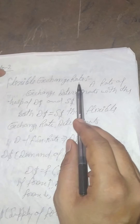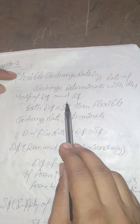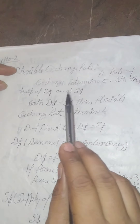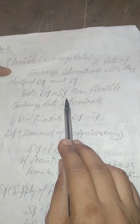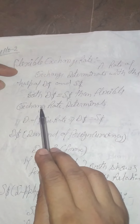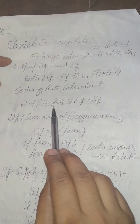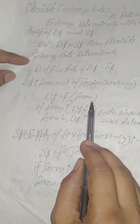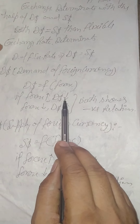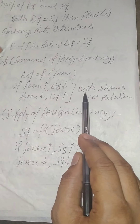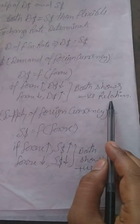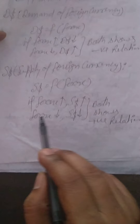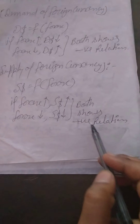Flexible exchange rate: a rate of exchange is determined with the help of demand and supply of foreign currency. Both demand and supply of foreign currency must be equal for the flexible exchange rate to be determined. Demand of foreign currency is a function of forex — when forex rises, demand falls; when forex falls, demand rises — negative relation. Supply of foreign currency is also a function of forex — when forex rises, supply rises; when forex falls, supply falls — positive relation.